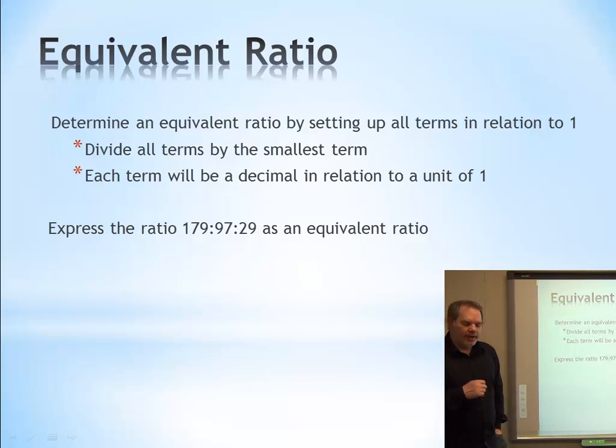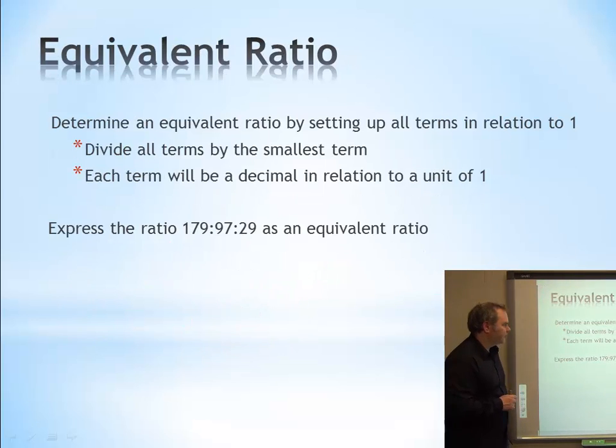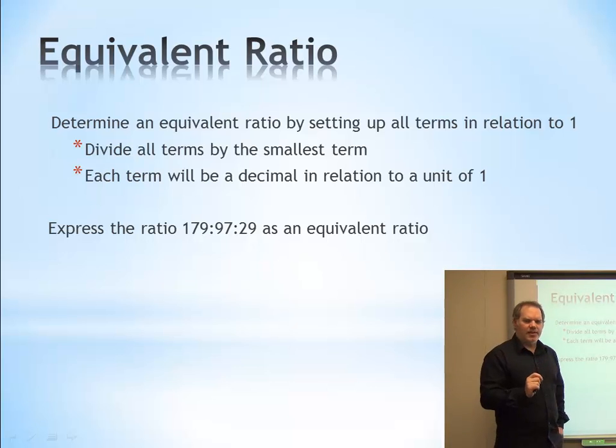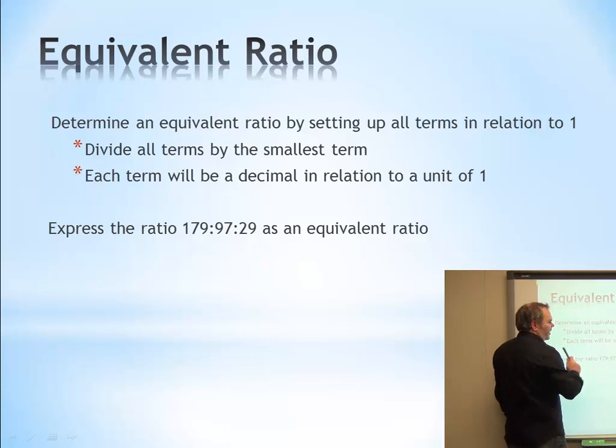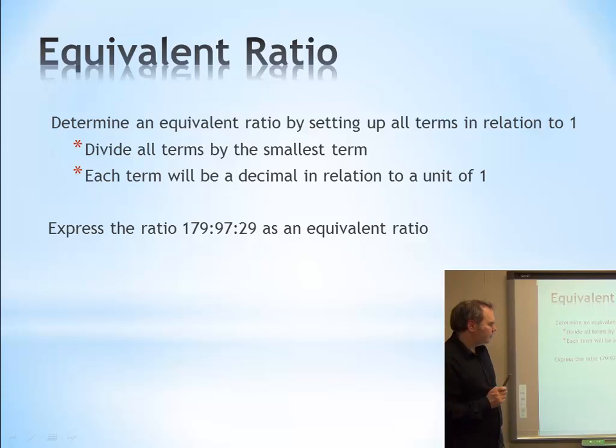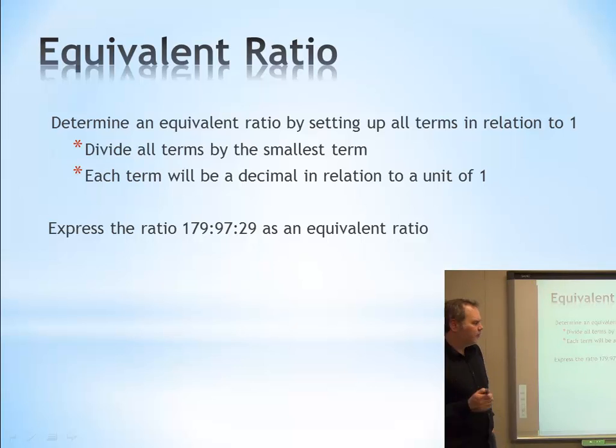Alright. The second thing we're going to do is equivalent ratio. And an equivalent ratio, which we actually had here coincidentally, but lowest terms don't relate to equivalent ratios. What we're going to do is we're going to set it up so that we're going to compare in relation to 1. So we don't want any fractions less than 1, but we do want 1 to be the lowest value in our ratio. So we're going to divide all the terms by the smallest term.